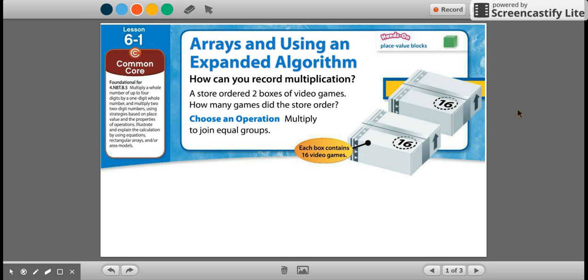Welcome to Topic 6. Topic 6 is taking what we learned in Topic 5 and taking it a little bit further, especially topics 1 and 2. The standard is going to be pretty much the same: multiply a whole number of up to four digits by a one-digit number, and multiply two two-digit numbers using strategies based on place value and the properties of operations.